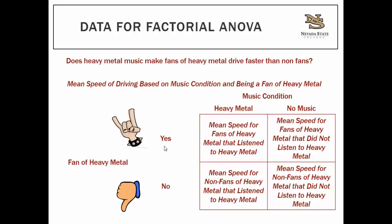If we look at what the data looks like for a factorial ANOVA — again, we're using a two-by-two design. Using the heavy metal research question, you'd have fans and non-fans, and among those fans, about half would be randomly assigned to the heavy metal condition, where they're driving and listening to heavy metal music on the highway, and you'd record their mean speed.